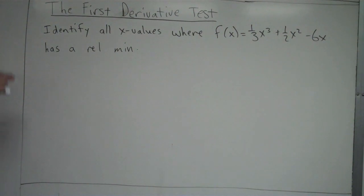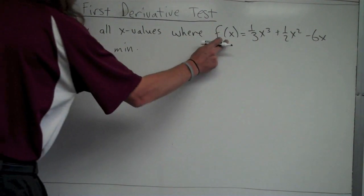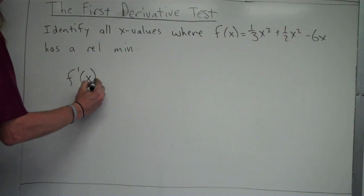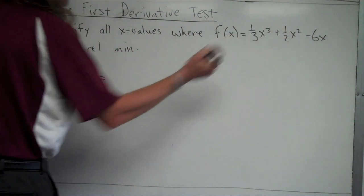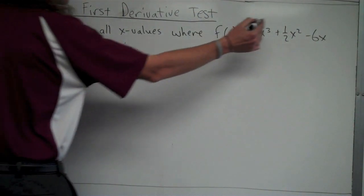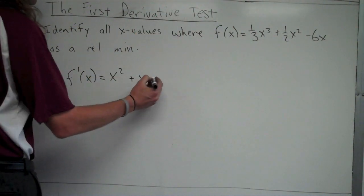So, we want to know, where does f prime change from negative to positive? So, we're going to make a first derivative sign chart, like we did in the example where we found where the function is increasing. So, in order to do that, we're going to go ahead and find the derivative of this, f prime. So, I'm going to bring the three down in front, it'll cancel the one-third, so it'll just be x squared, plus, bring the two down in front, it'll cancel the one-half, just plus x, then subtract one from my exponent, minus six.